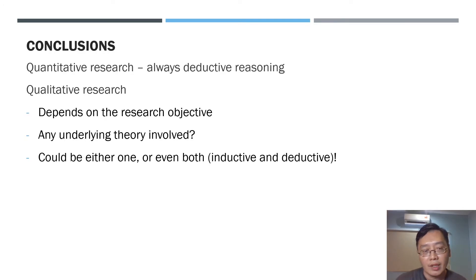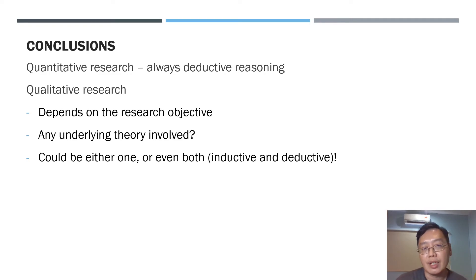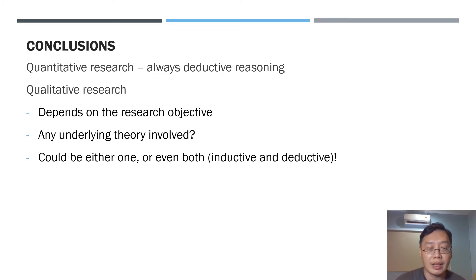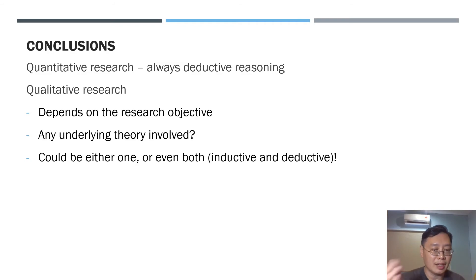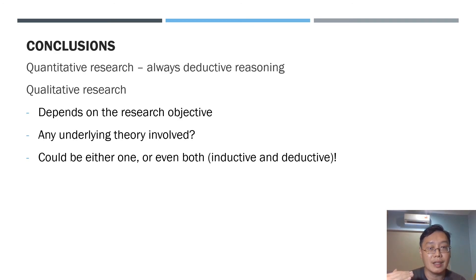So the conclusion is that if it is quantitative research, quite definitely we can say deductive reasoning is involved. But if it is qualitative research, we need to look at the research objective and understand what the research is trying to achieve. We also need to look at whether there is an underlying theory involved in analyzing the data. Considering research objectives and theories, it could be either one, or even both — where analysis goes through two stages: the first stage deductive, followed by inductive.